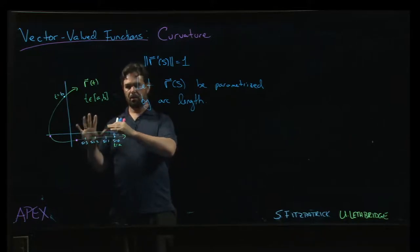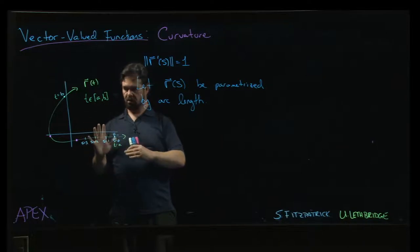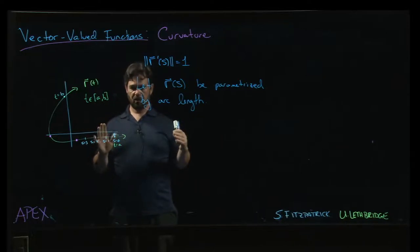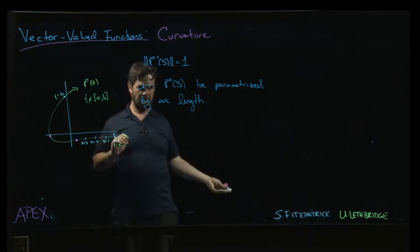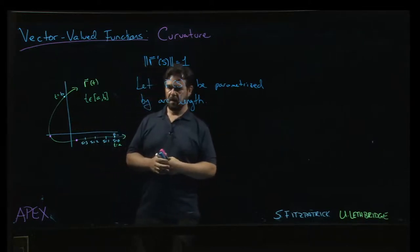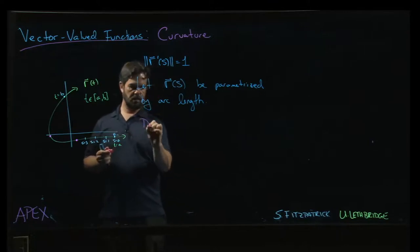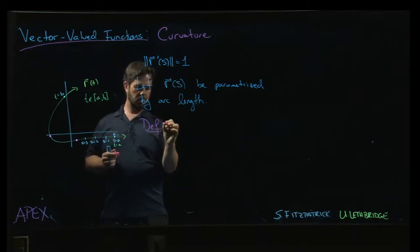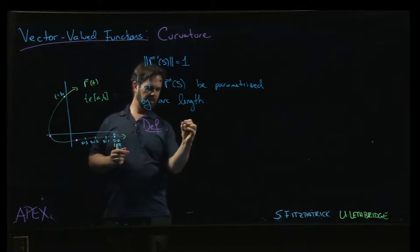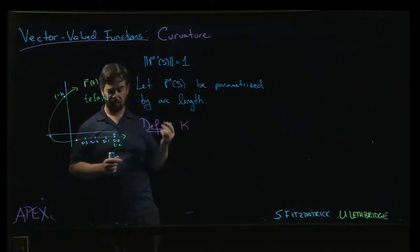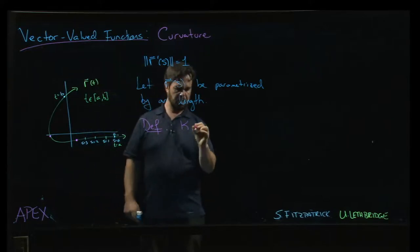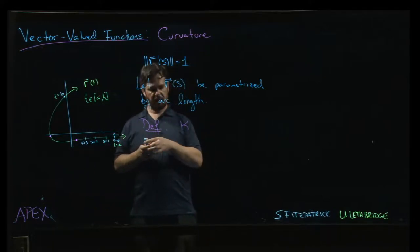Curvature gives us a precise measurement of this, and it does it for parametric curves in both two or three dimensions or higher dimensions. The definition looks like this: we use kappa, which kind of looks like a K. This is the letter that we use for curvature.